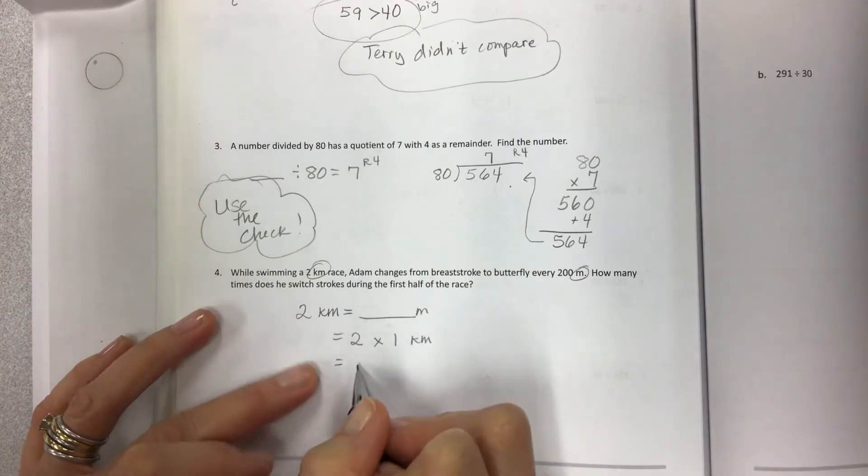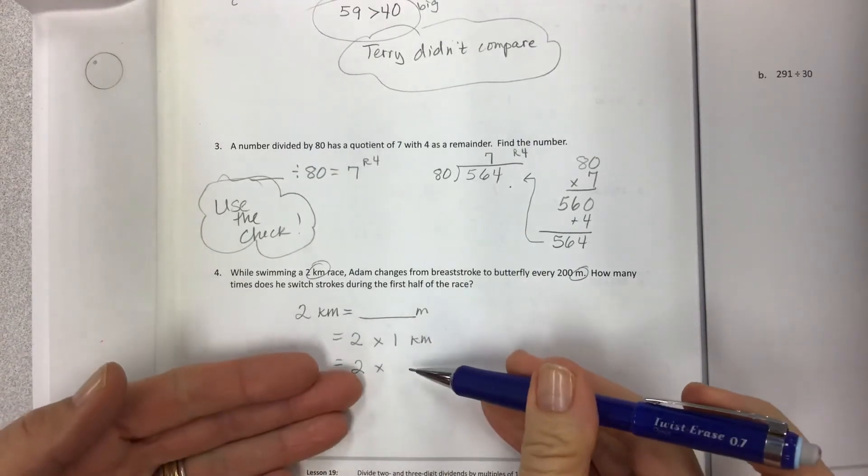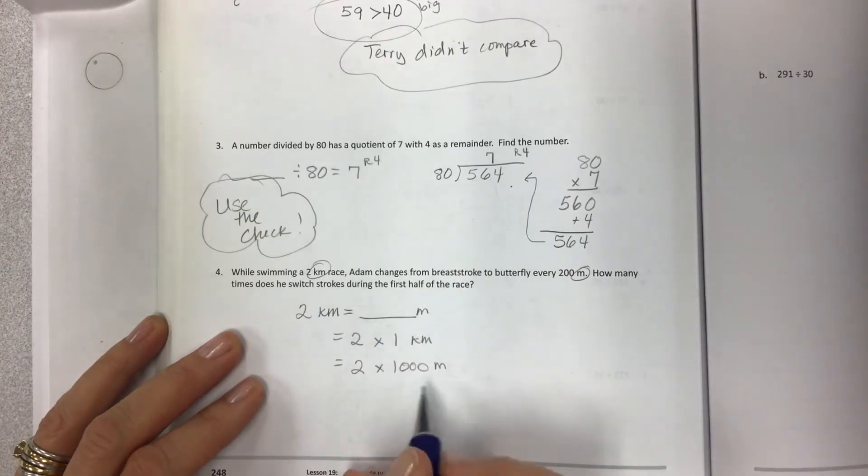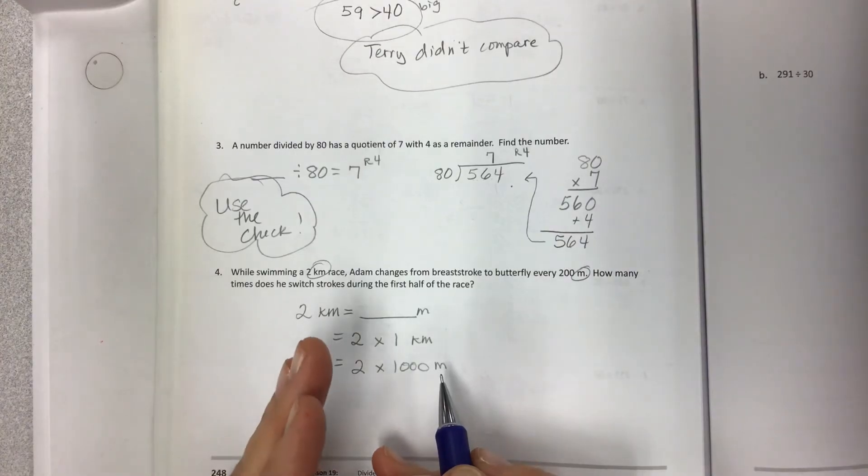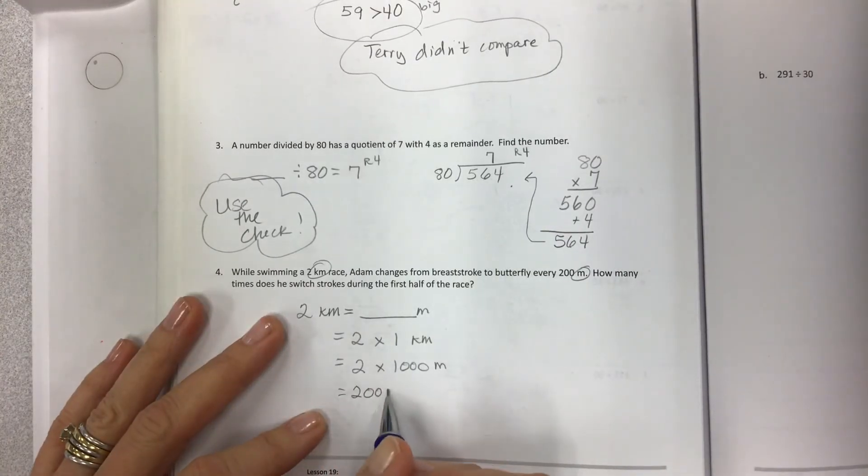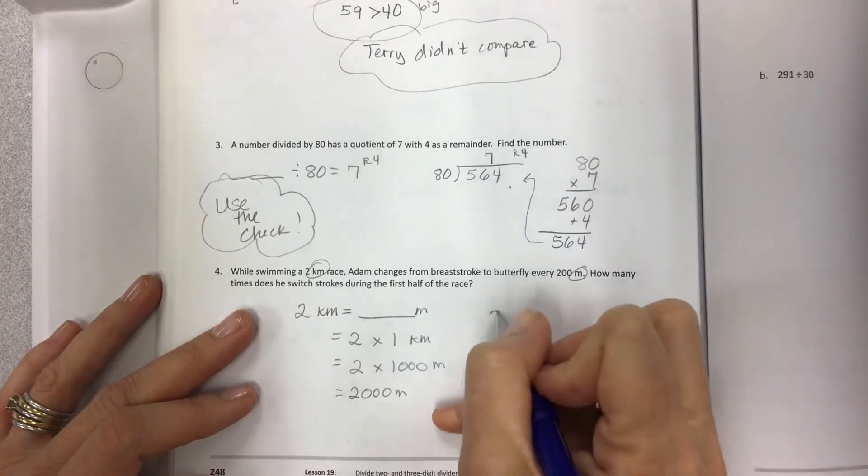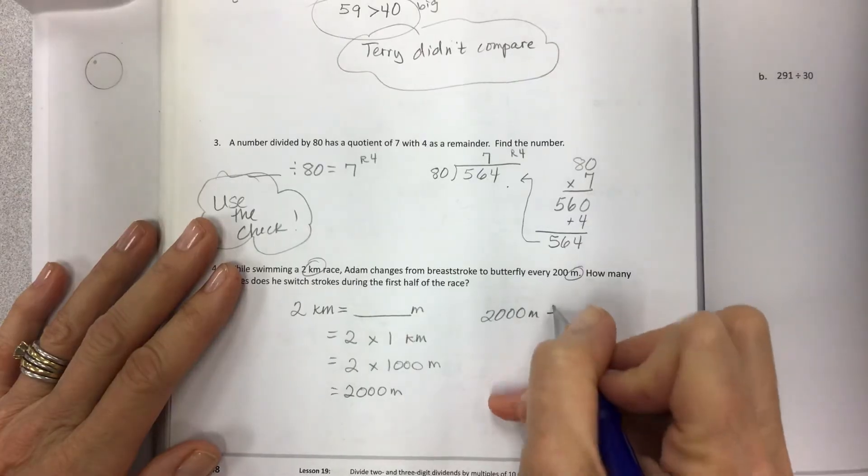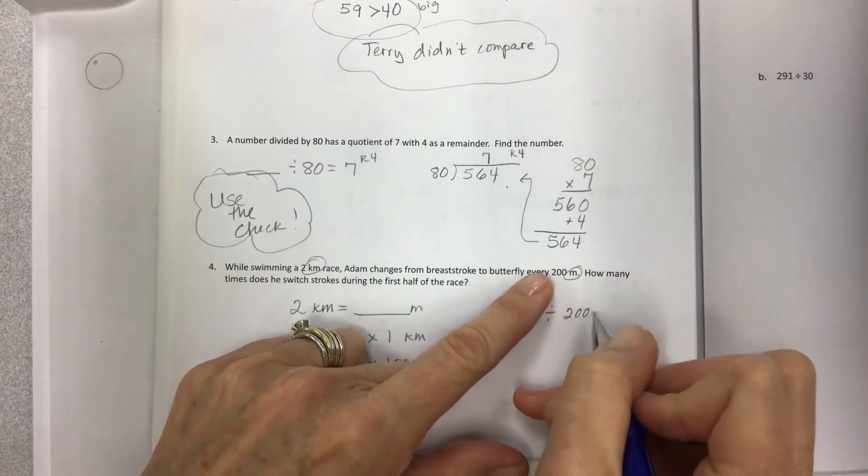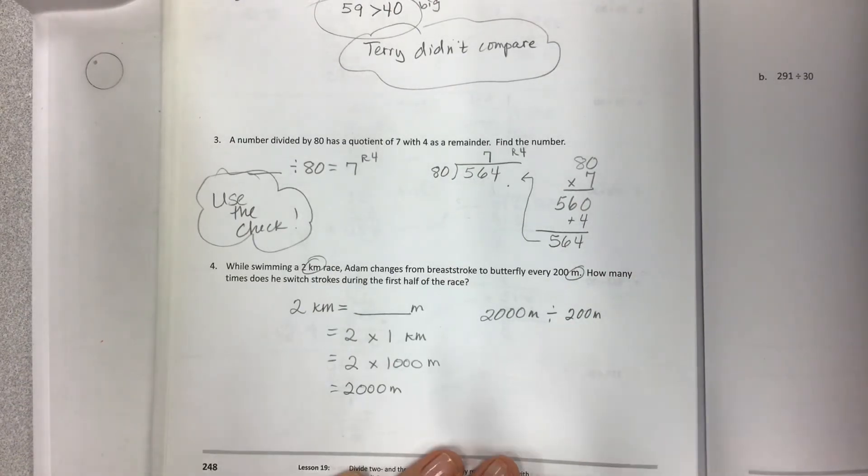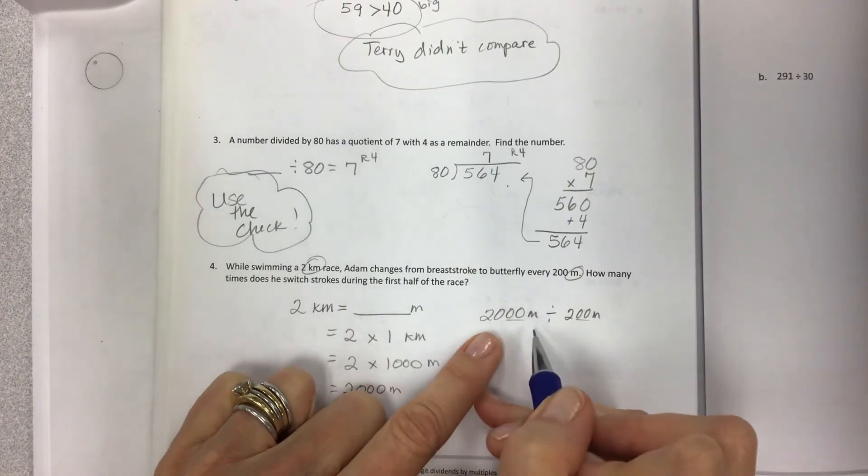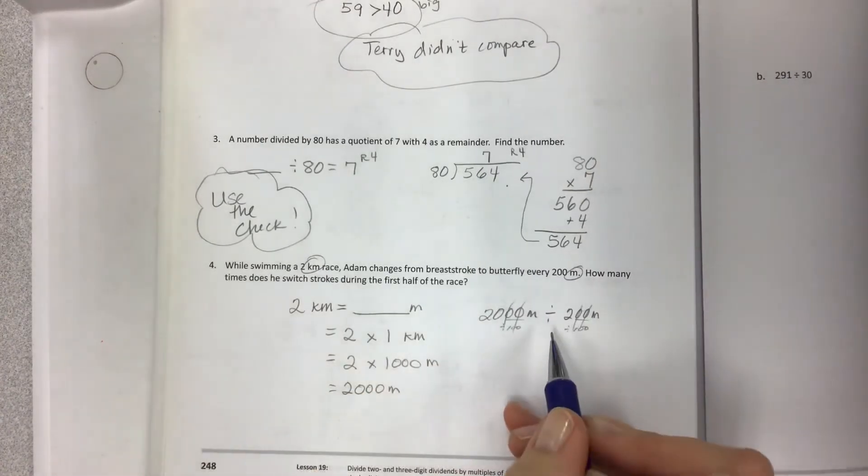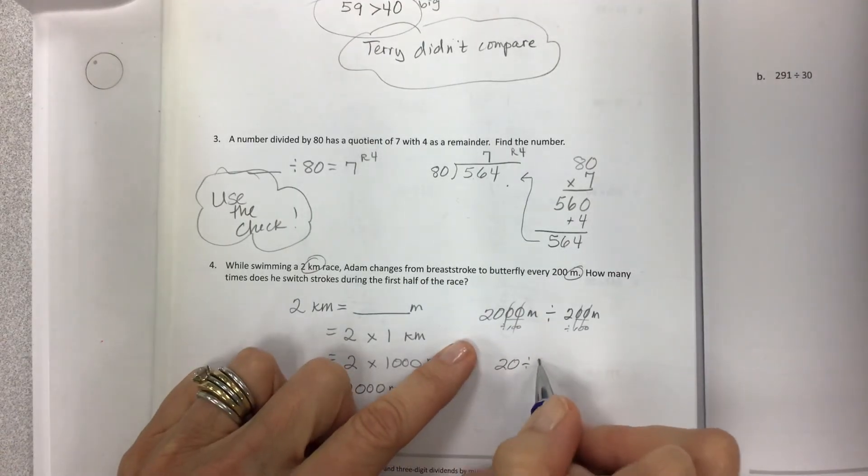So 1 kilometer is how many meters? Well, it's 1,000 if you remember that. Remember, 3 place value positions from meters, 1, 2, 3. And then that'll give you 2,000 meters. So now let's take our 2,000 meters. Oh yeah, if you like these videos, click subscribe and come back again. I am trying to help you guys as much as possible. And we're going to divide this by the every 200 meters that he changes stroke. Now I've got something with two zeros here and lots of zeros here. So I could divide each side by 100. Remember, that's our strategy to get rid of a pair of zeros on each side. And that leaves you with 20 divided by 2.